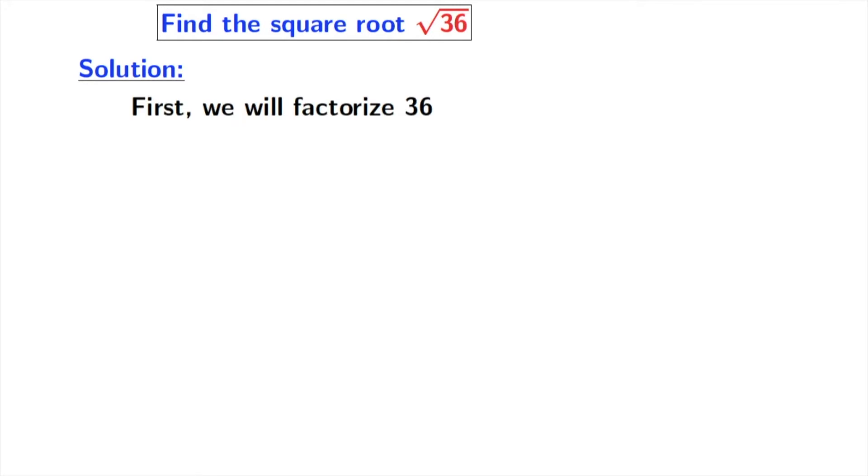Firstly, we will factorize 36. We know that 36 is an even number, so it will be 2 times something. And that something is 18.